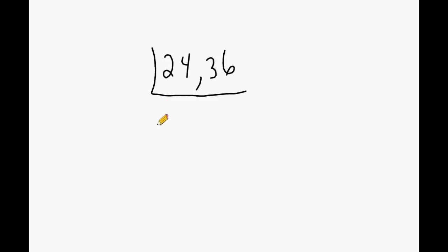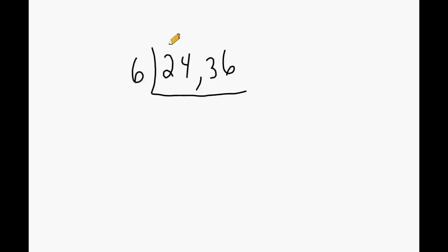Some students aren't sure just by glancing at the numbers what the GCF is. Some people can look at 24 and 36 and say they know 12 is the biggest number that fits into both. But other students may struggle with basic multiplication tables. In that case, you can start with any common factor other than 1 and eventually get to the GCF. For example, someone may recognize that 6 is common to 24 and 36. So I'll write a 6 on the outside, divide 6 into 24 — which goes 4 times — and write that below. Then 6 into 36 goes 6 times, so we write a 6 below that.